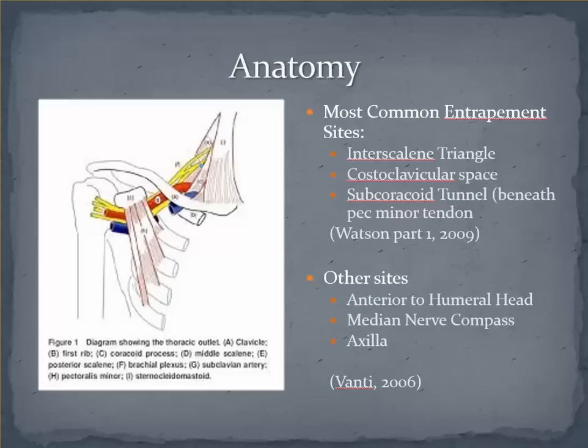Let's quickly review some of the relevant anatomy in TOS presentations. From proximal to distal, the three most common entrapment sites usually discussed include the interscalene triangle, where the anterior and middle scalenes form the anterior and posterior borders of this triangle and the rib forms the inferior border. The next region is the costoclavicular space, where structures can be compressed between the clavicle and first rib as the first rib becomes elevated. The subclavius muscle and costocoracoid ligaments may also be related to entrapment here, but this is much less common.